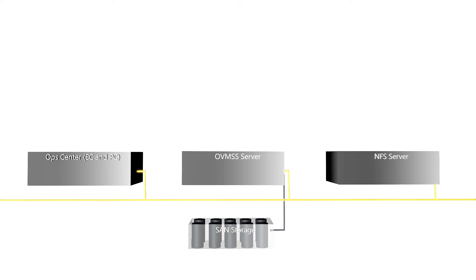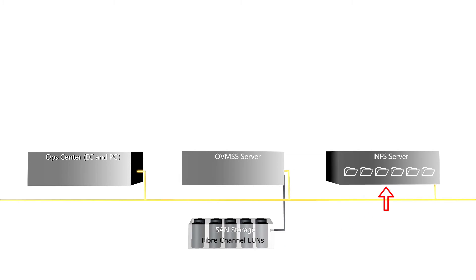Suppose a virtualization server has direct access to SAN and NAS storage. It's directly connected via fiber channel to a SAN storage device with LUNs, and networked to a network file server for shared storage. On the virtualization server, Solaris IO multipathing is enabled so that Ops Center can see and use the LUNs for its SAN storage libraries.